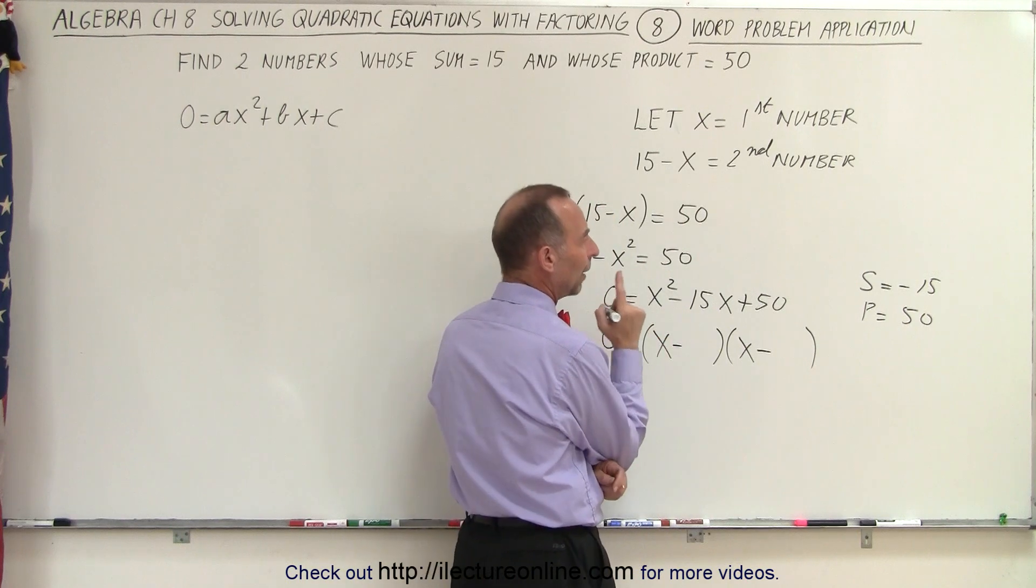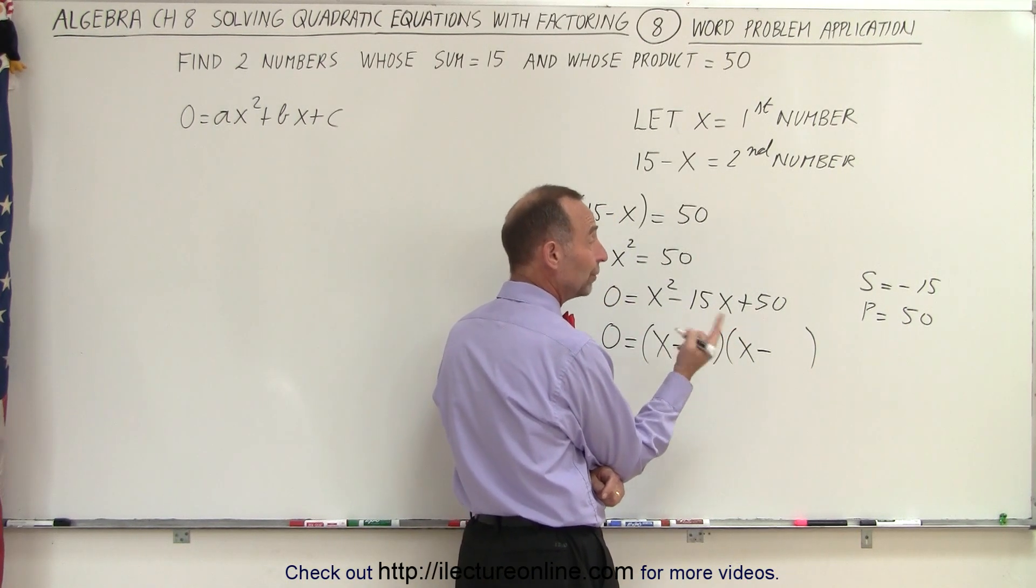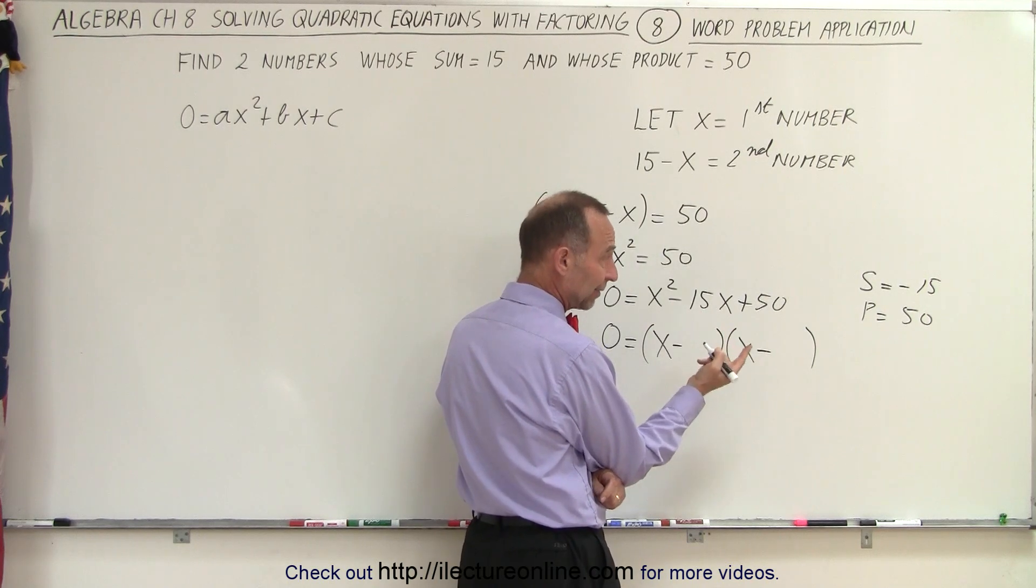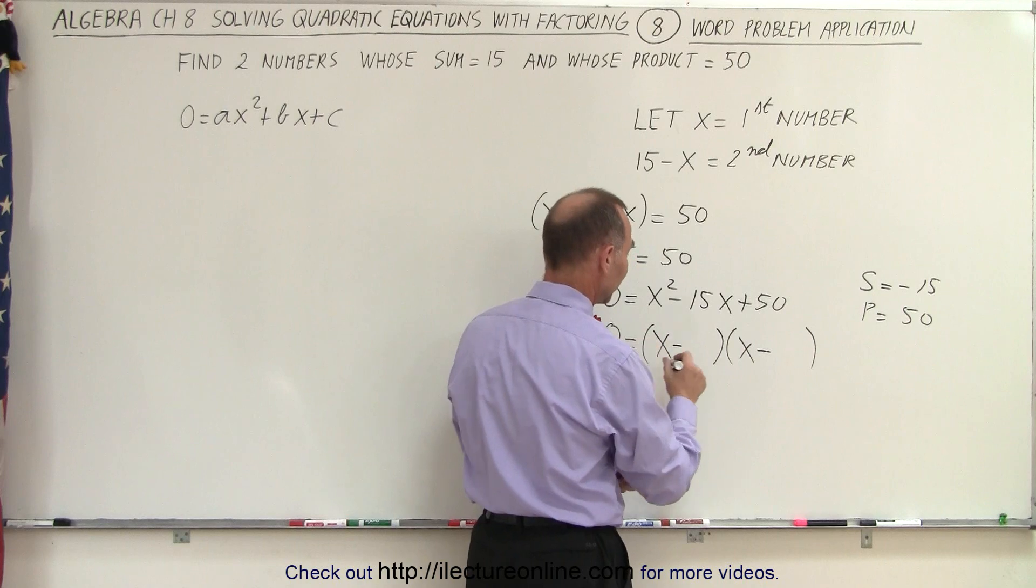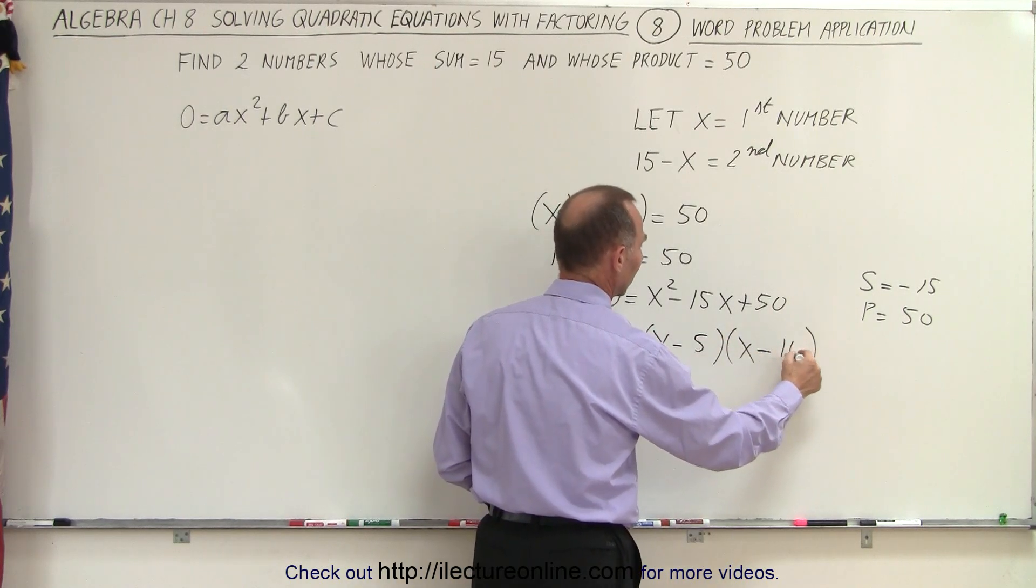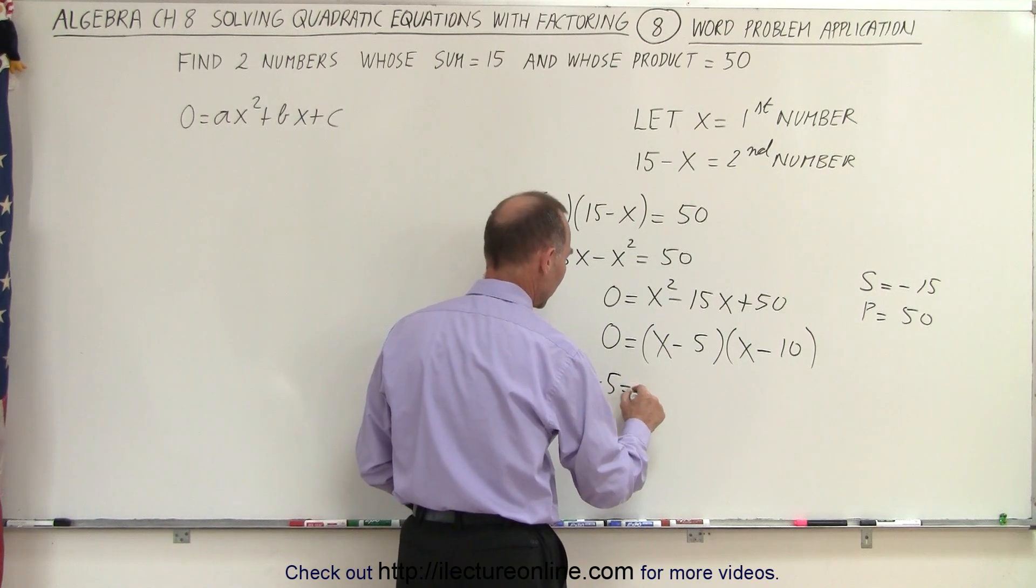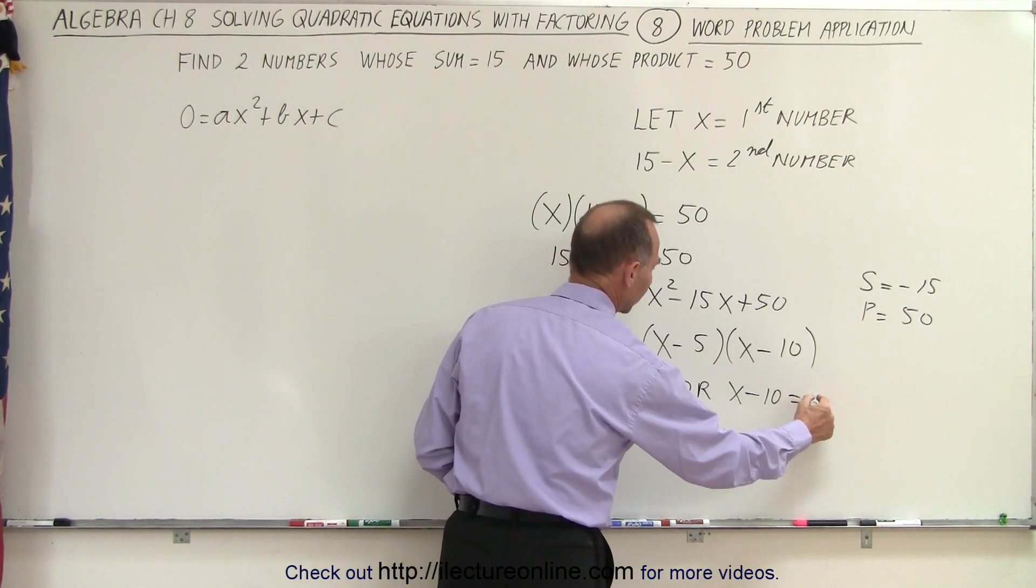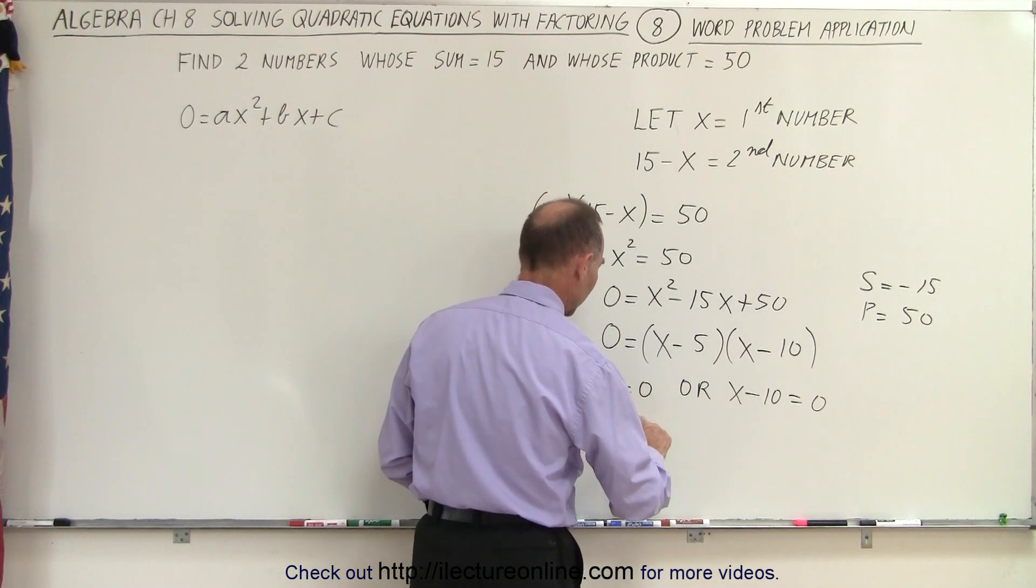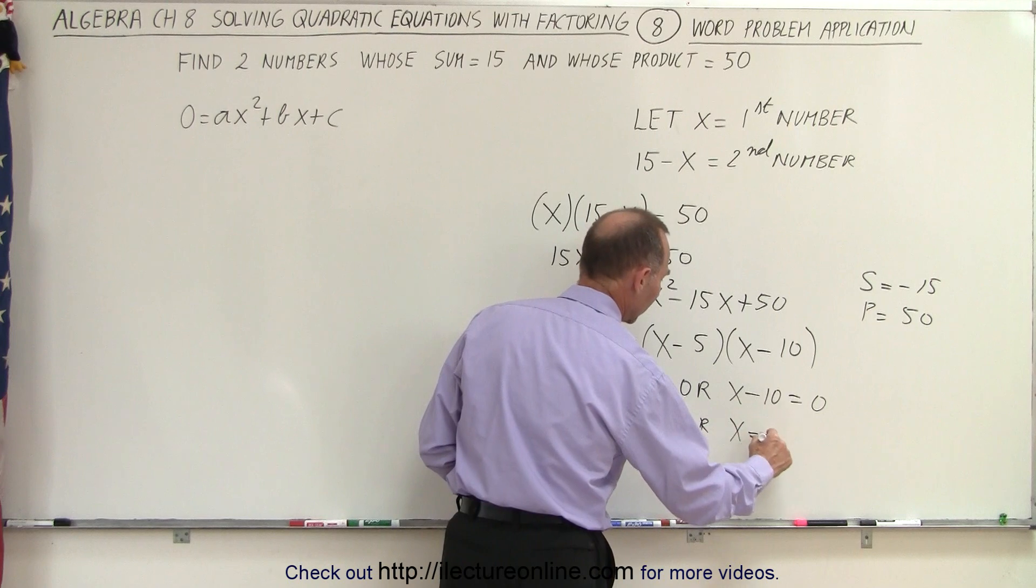So let's see here. How about 10 times 5? 10 times 5 is 50. If I make them both negative, a negative 5 times a negative 10 is positive 50, and when I add them I get negative 15, so a 5 and a 10. And so that means that either x minus 5 equals 0 or x minus 10 is equal to 0, which means that x must equal 5 or x is equal to 10.